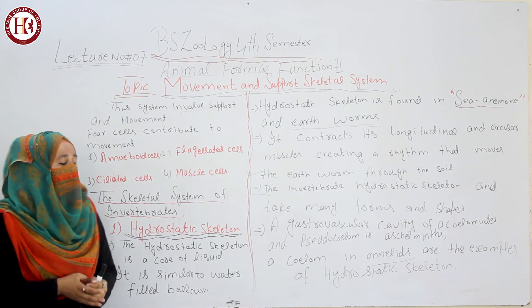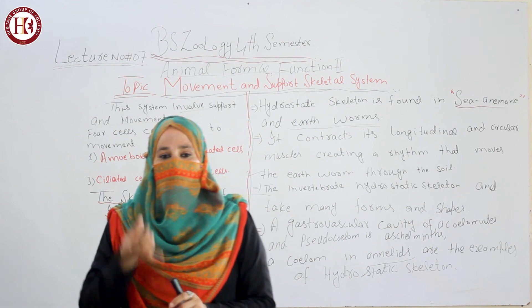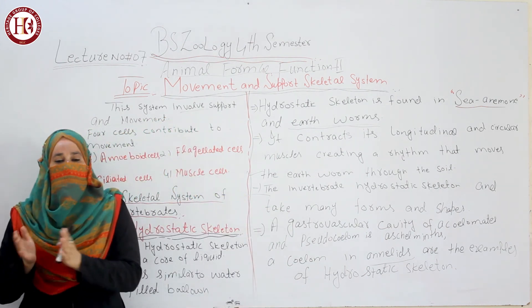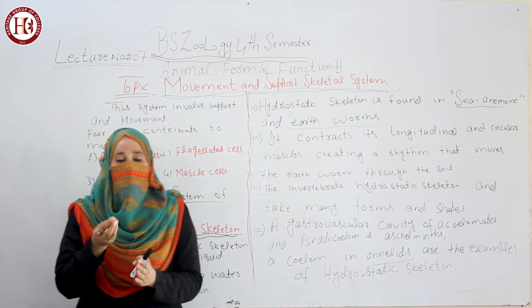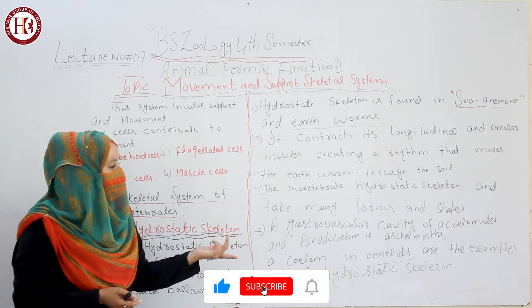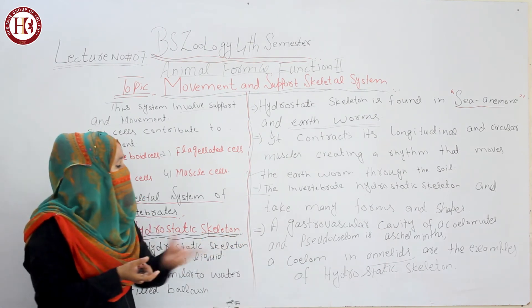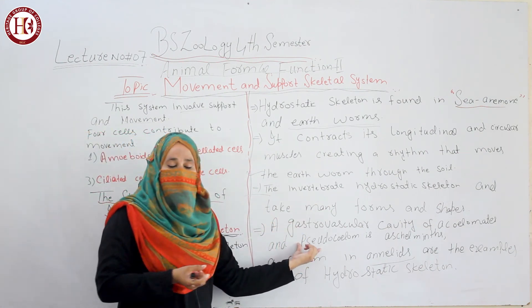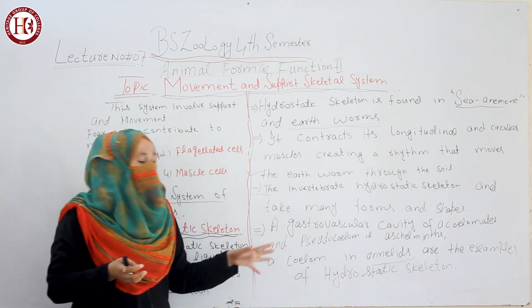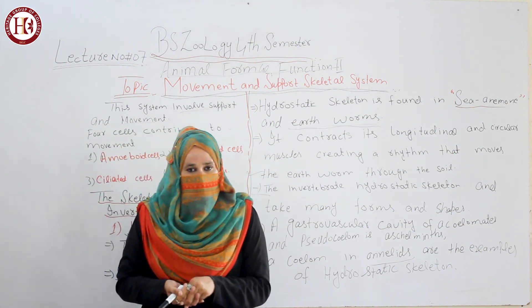There are three types of body cavities. Living organisms having a true cavity are called coelomates. Those having no cavity are called acoelomates. Those having a false body cavity are called pseudocoelomates. The gastro-vascular cavity is found in acoelomates; pseudocoelomates have a false body cavity found in Aschelminthes; and coelomates with a true cavity are found in annelids. These are the examples of the hydrostatic skeleton.